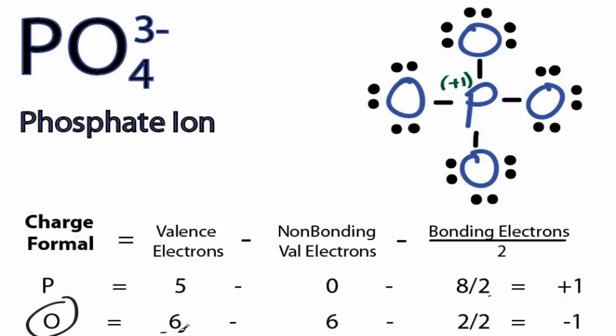For Oxygen on the periodic table, 6 valence electrons. Each Oxygen has 6 of these non-bonding valence electrons and then 2 bonding, which we divide by 2. 6 minus 6 minus 1 gives us minus 1 as the formal charge on the Oxygen. And they're all the same.